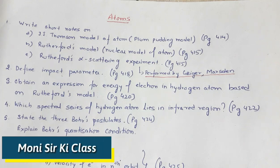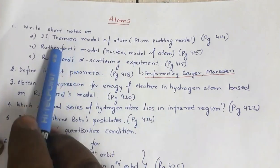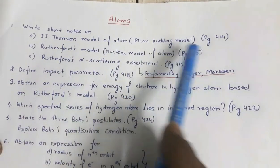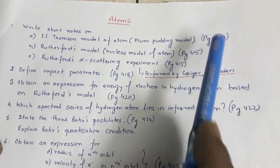This is with regard to your forthcoming board examinations. Now the first is write short notes on J.J. Thomson model of atom, that is the plum pudding model. Now the answer to this is given in page number 414.